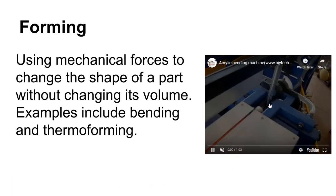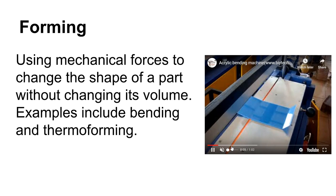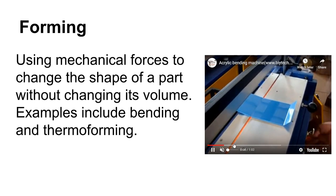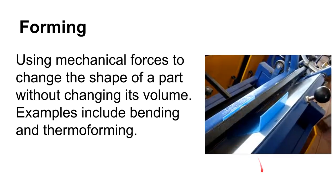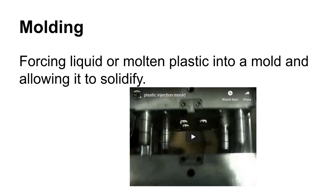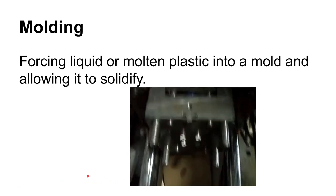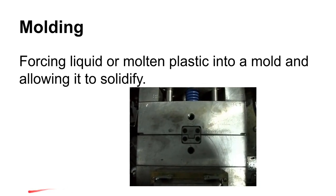An example of forming is a line bender, where you heat up the plastic and bend it along a single heated strip. There are different types of forming processes that we'll cover in more detail later. Molding is really the most common way to make plastic parts because it works so well, but any molding operation is going to require hard tooling.